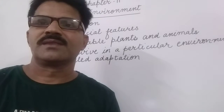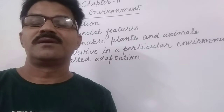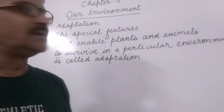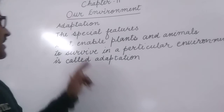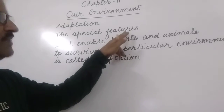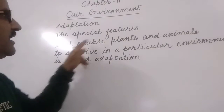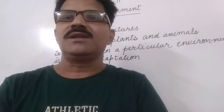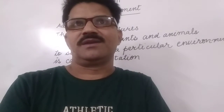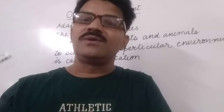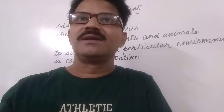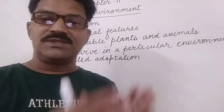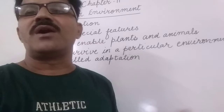Some features that enable plants and animals to survive in a particular environment is called adaptation. For example, the polar bear lives in cold regions. They have a layer of fat, and this layer of fat keeps them warm.